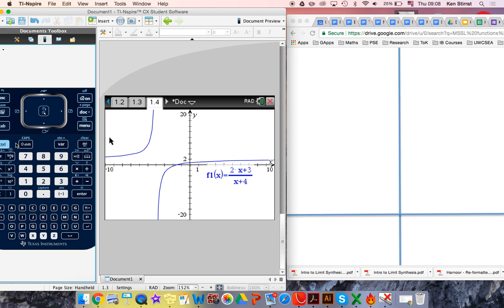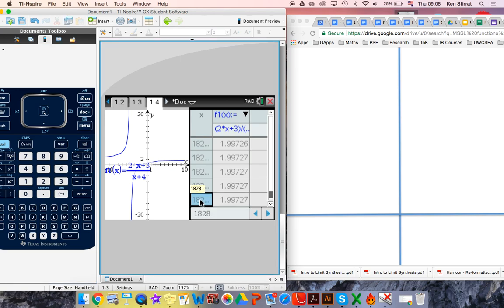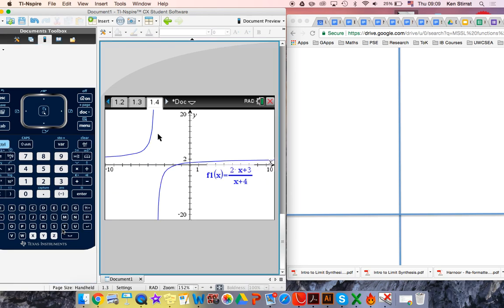Confirm. Control T. And just go ahead and fill your boots. Get all the way down there. So I'm now on x equals 1828. The y value is 1.99727. y equals 2 is a horizontal asymptote. You would sketch that with a dashed dotted line on your axes as well. Let's go back. Control T. Take it off.